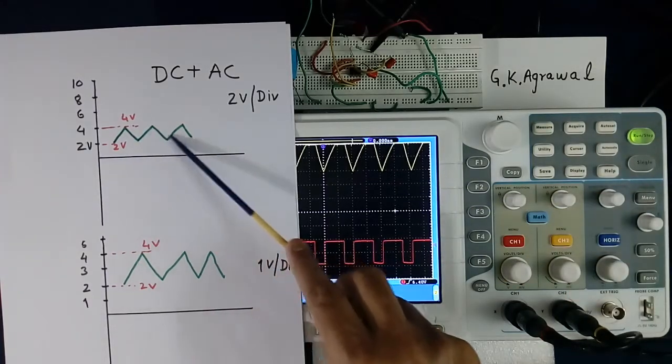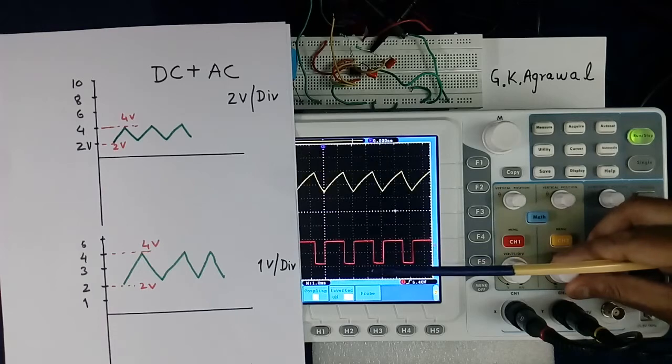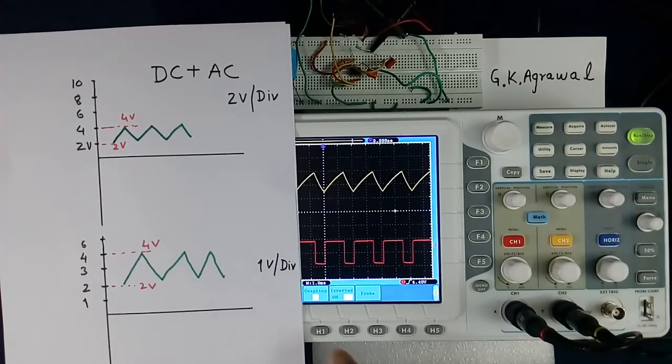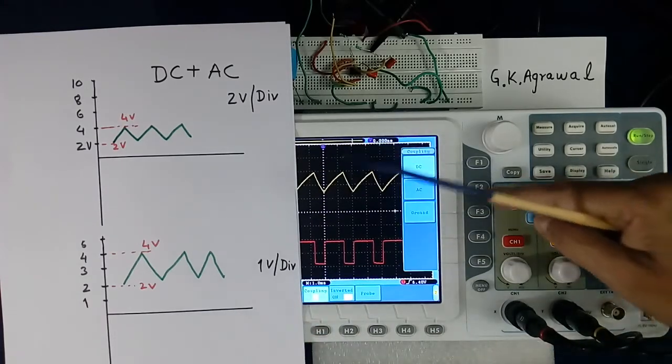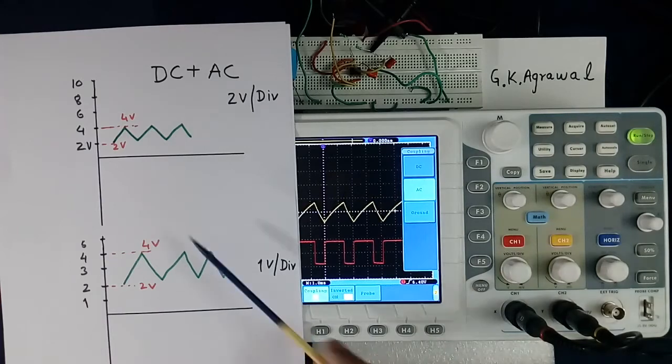If you want only this AC, then you have to select the AC coupling. This is coupling. I have selected AC coupling. Now DC has gone, only AC.